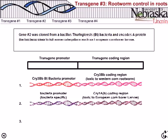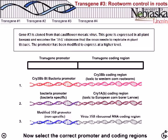Gene two was cloned from Bacillus thuringiensis bacteria and encodes the protein used to kill caterpillars such as European corn borer larvae. Gene three is cloned from cauliflower mosaic virus, expressed in all plant tissues, and encodes the 35S ribosome that the virus needs to replicate. The promoter in gene three has been modified to express at a higher level.